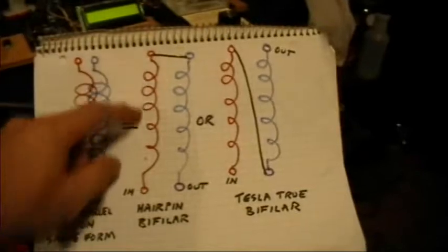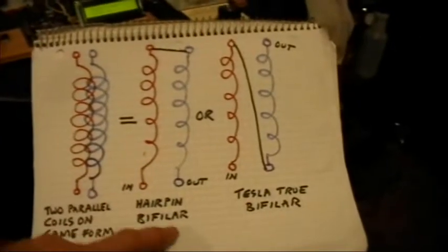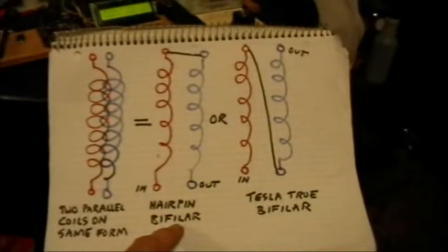So it's pretty clear that in this case, the magnetic fields should cancel out, right? But this is not a true Tesla bifiler winding.